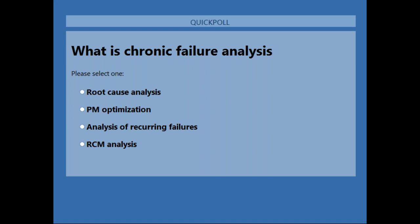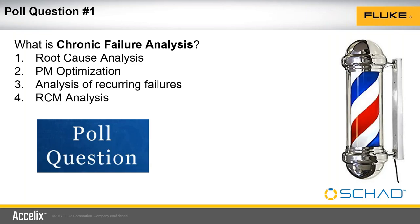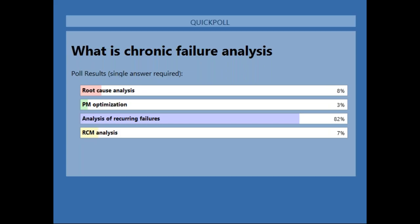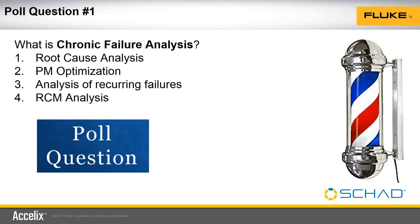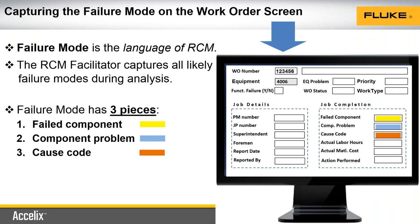We're going to close the poll now and share the results. 82% said analysis of recurring failures; 8% said root cause analysis; 7% said RCM analysis; and 3% said PM optimization. I'm going to agree with the 82% — analysis of recurring failures is the answer for chronic failure analysis.